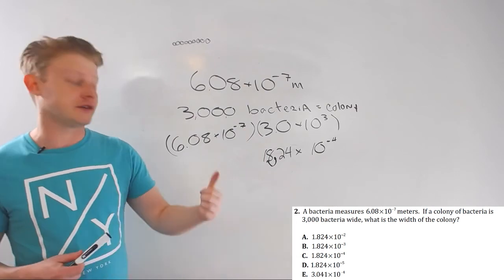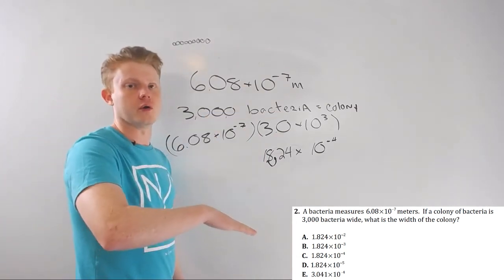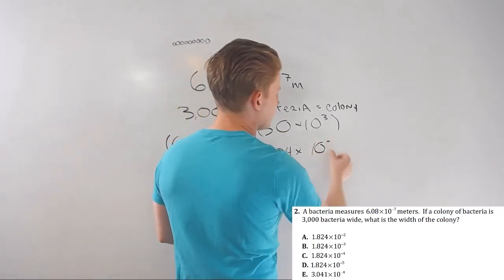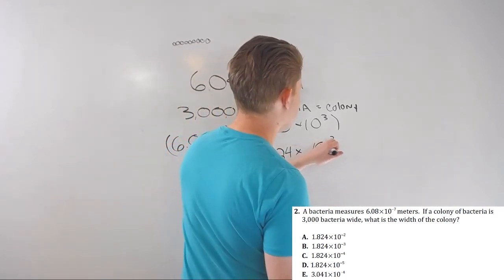It's going in the positive direction. So, it goes from negative four, which is lower than negative three. So, it goes up by one, up to negative three, negative four. And that's your answer.